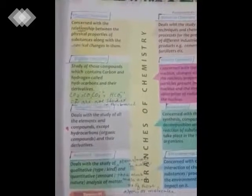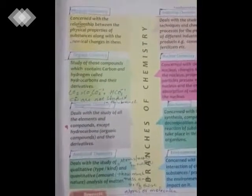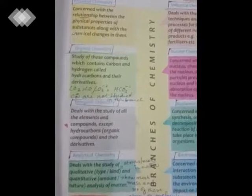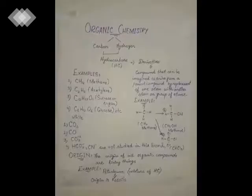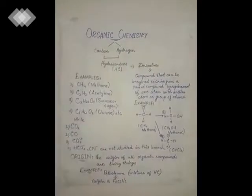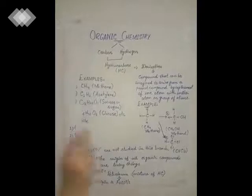After the explanation of physical chemistry, now we discuss organic chemistry. What is organic chemistry? It is the study of those compounds which contain carbon and hydrogen, called hydrocarbons, and their derivatives. As the definition shows, organic chemistry is the study of carbon and hydrogen compounds collectively called hydrocarbons and their derivatives.